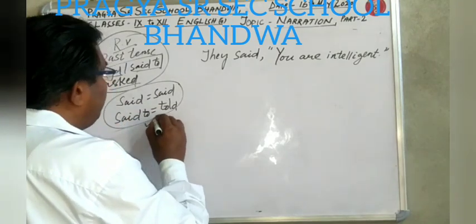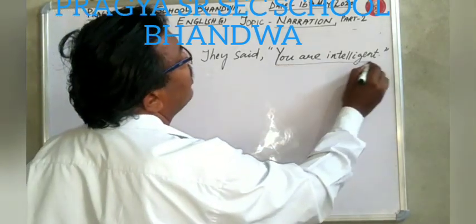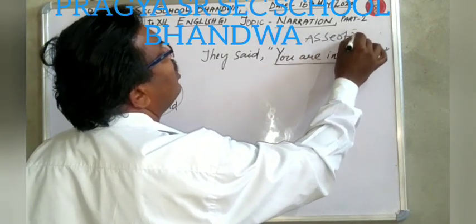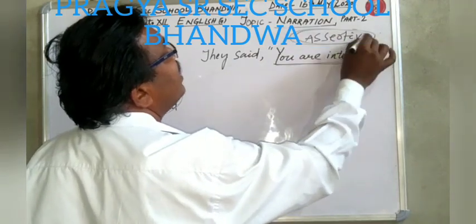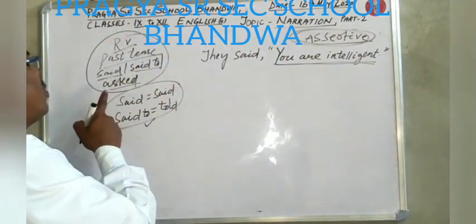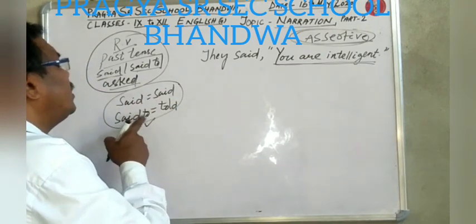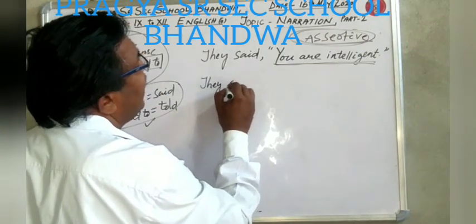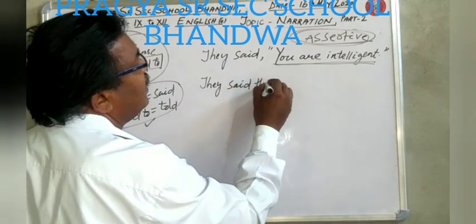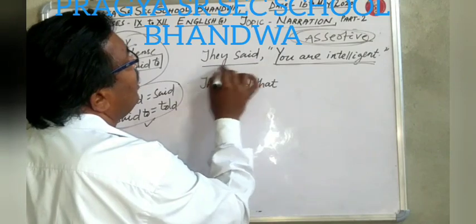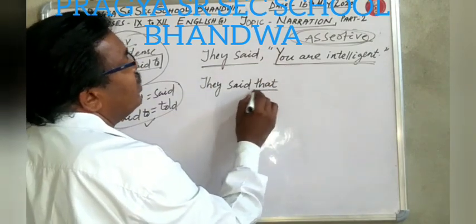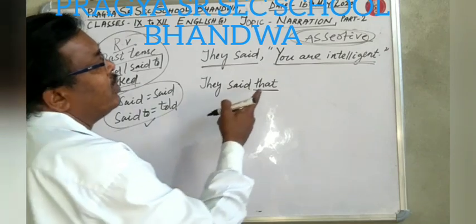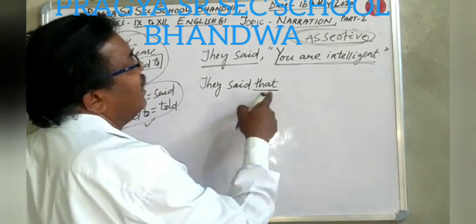These changes will be done in assertive sentences. When the reported speech is an assertive sentence, the reporting word 'said' will remain 'said' and 'said to' will become 'told'. So the answer will be: they said that.